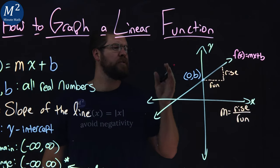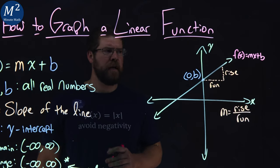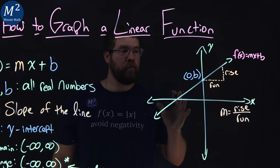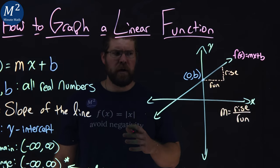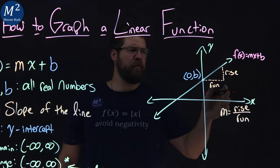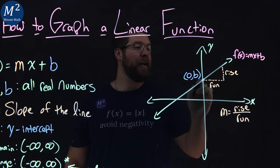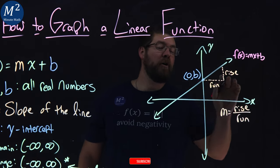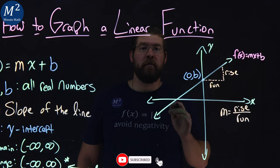From there, our slope is the other part. That is the rise over the run of the line. Slope m is equal to rise over run. How high in a given interval does it go, and how far does it go over as a rise over run?